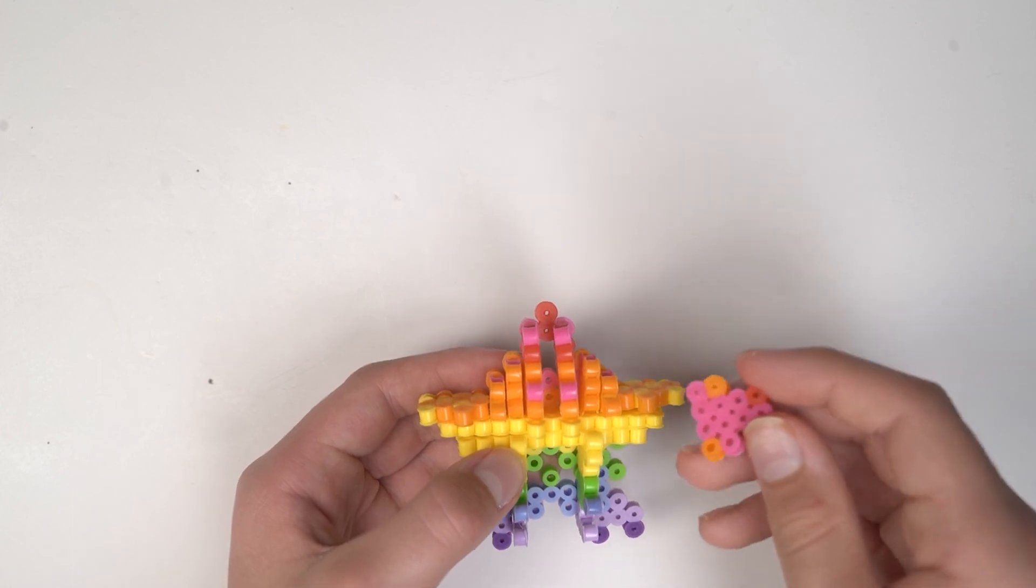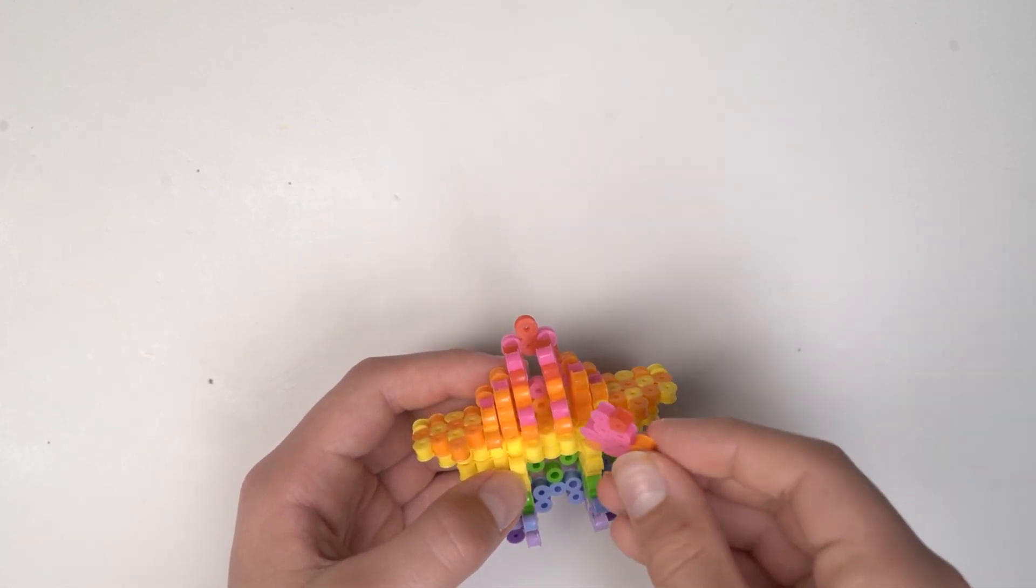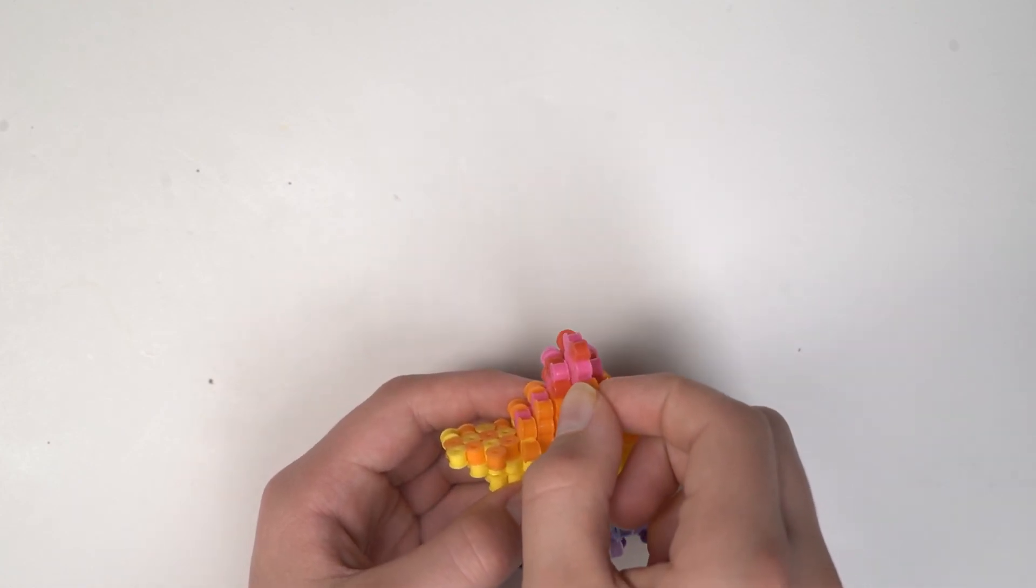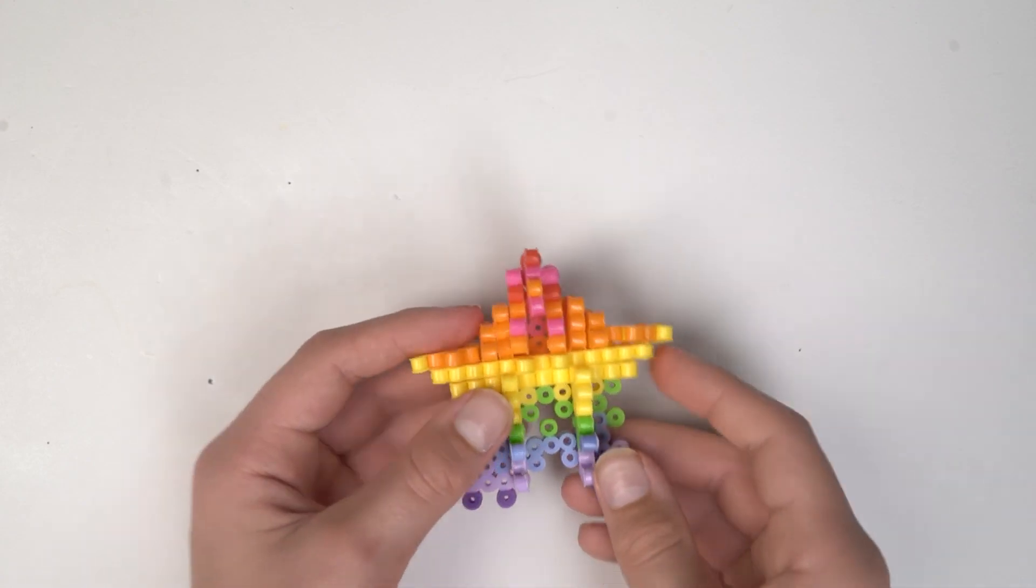Now we're going to take the final T-shaped piece and we're going to put it in so that it continues the checkered pattern. And now this part is complete. Time to start the back of the star.